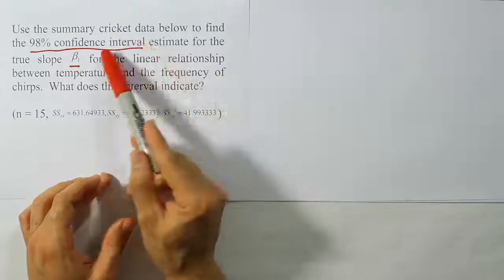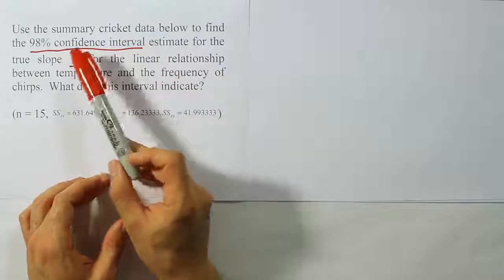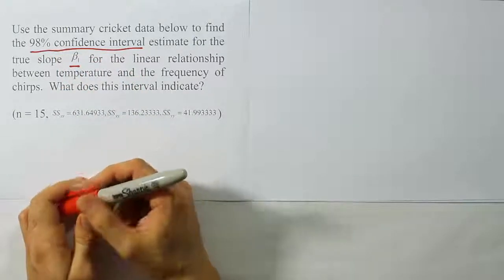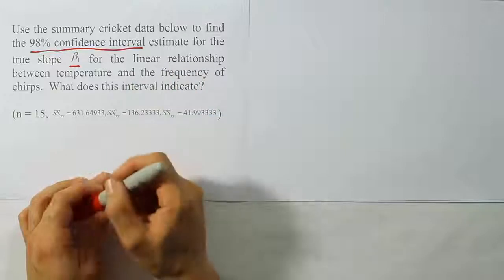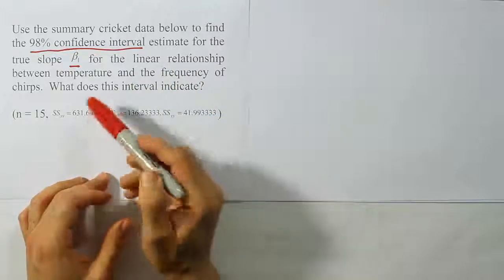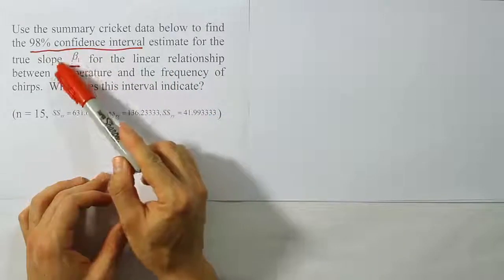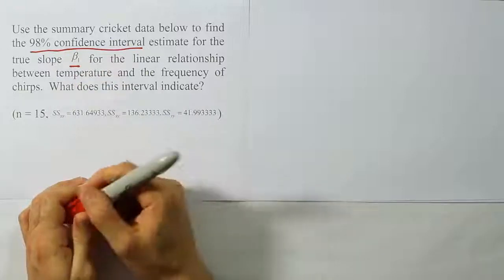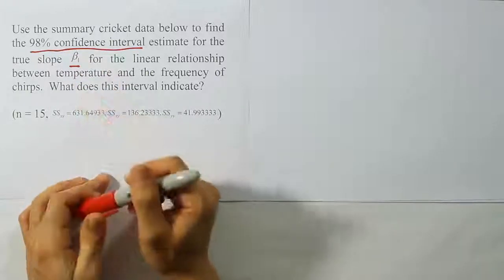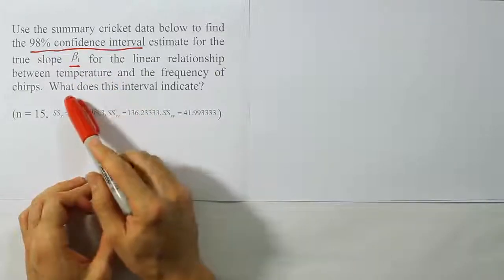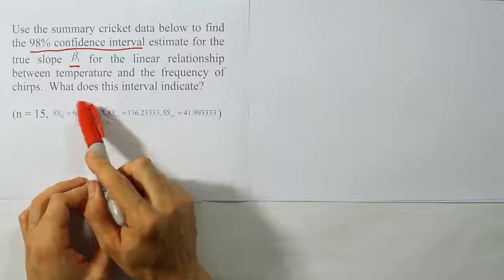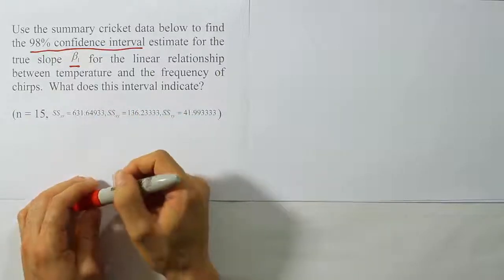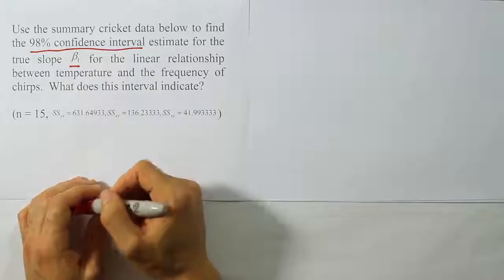Now we're doing a similar problem but constructing a confidence interval. Based on the interpretation of that interval, we'll be able to tell if there is in fact a linear relationship. The confidence interval is going to be constructed around the slope, and the important thing is that at the end we interpret that interval accurately. So let's start with the first step, which is to collect the data to construct the interval.